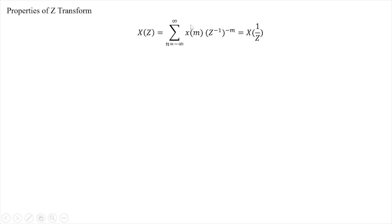This equals X(z) equals summation of x(m)(z^(-1))^(-m) equals X(1/z), which is the time reversal property.